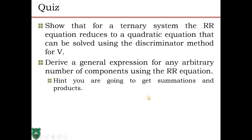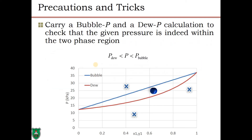As a quiz: show that for a ternary system the Rachford-Rice equation reduces to a quadratic equation solvable by the discriminant method for V, and derive a general expression for any arbitrary number of components using the Rachford-Rice equation — which will involve summations and products.